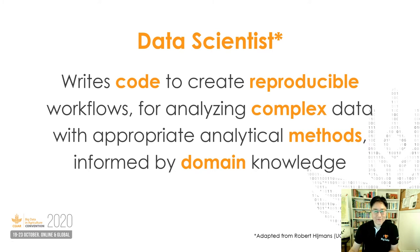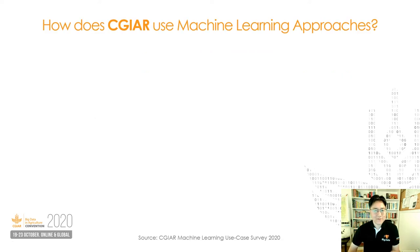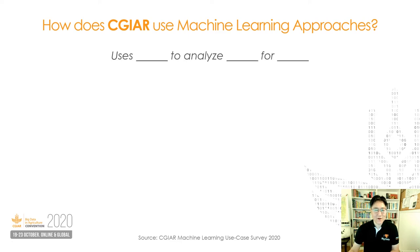Your knowledge in food systems domain is also very important to understand the context and interpret analysis results. So how does CGR use these machine learning approaches? We recently ran an online survey to collect CGR's machine learning use cases, where we asked to complete this sentence: what kinds of analytical methods they use, to analyze what kinds of data, for what purposes.